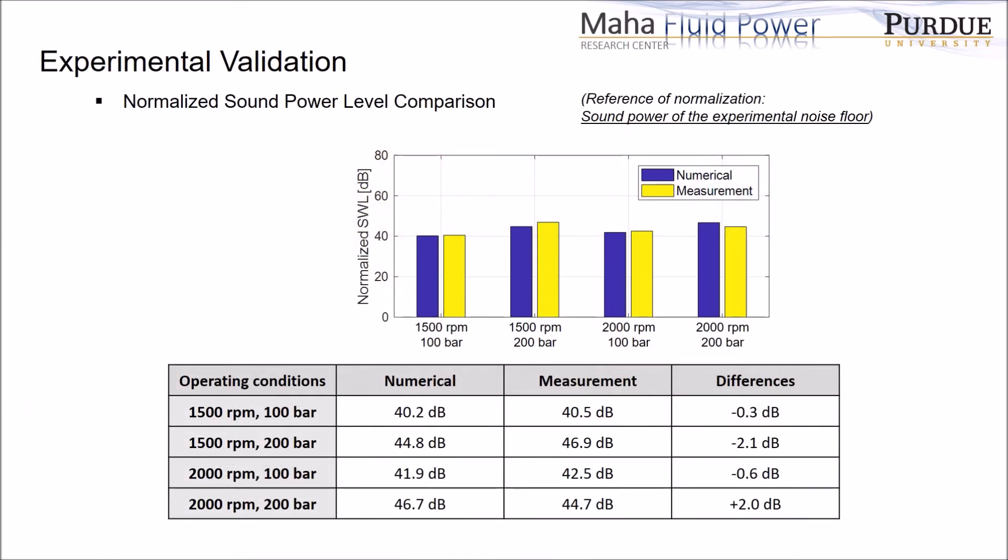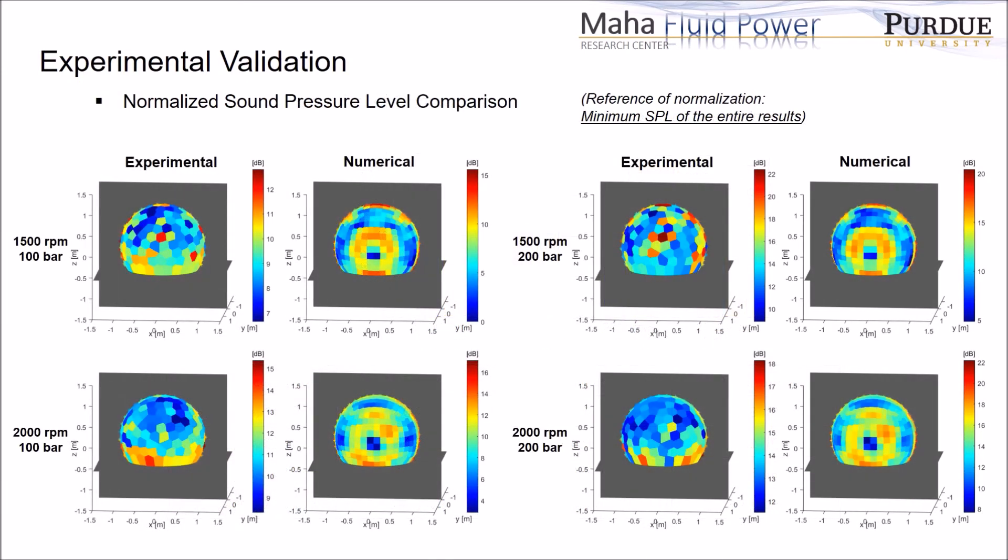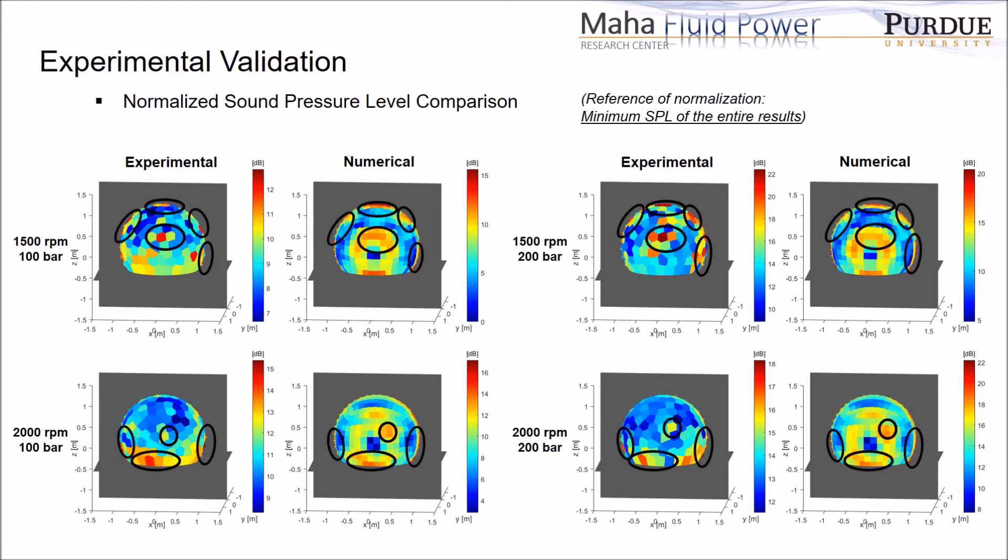The comparisons are made between numerical and experimental results for several operating conditions. As it can be seen in this slide, the model is able to predict the overall sound power levels with a fairly good accuracy. When it comes to the sound pressure level distribution, you can see the model is able to capture the noisy area.